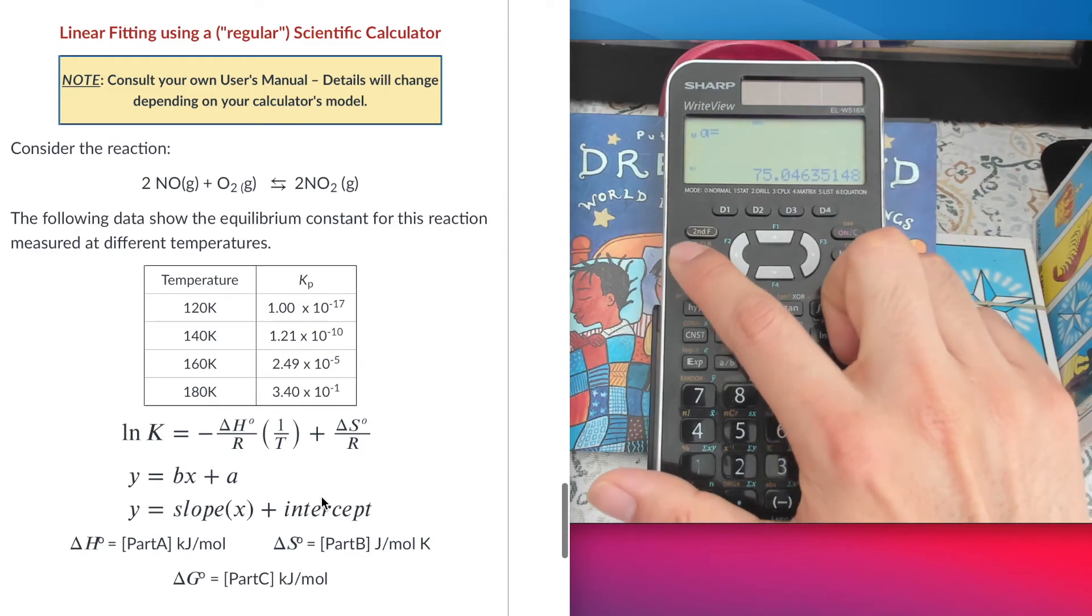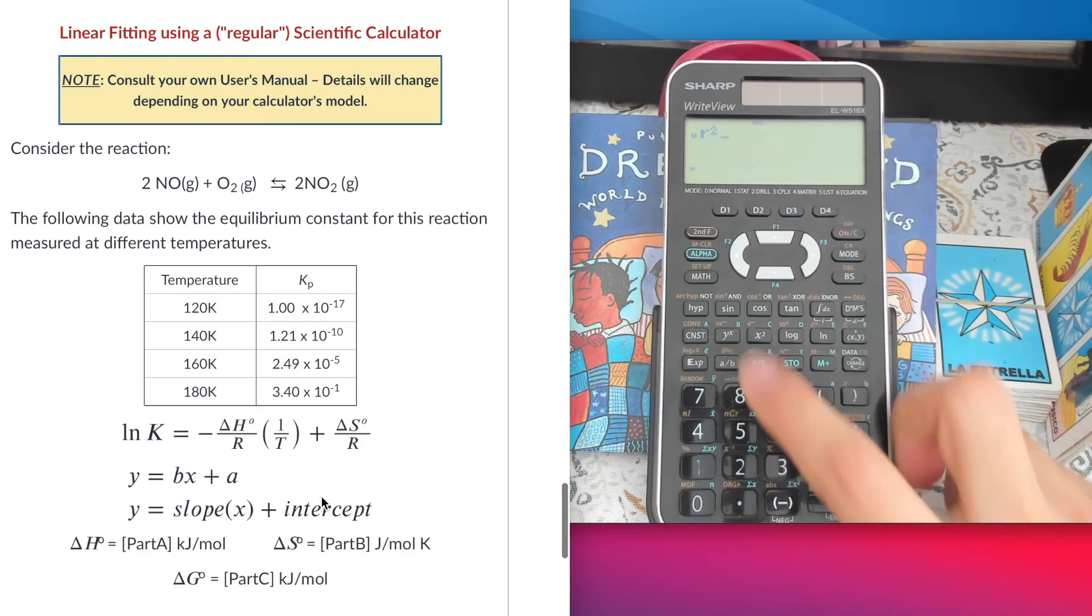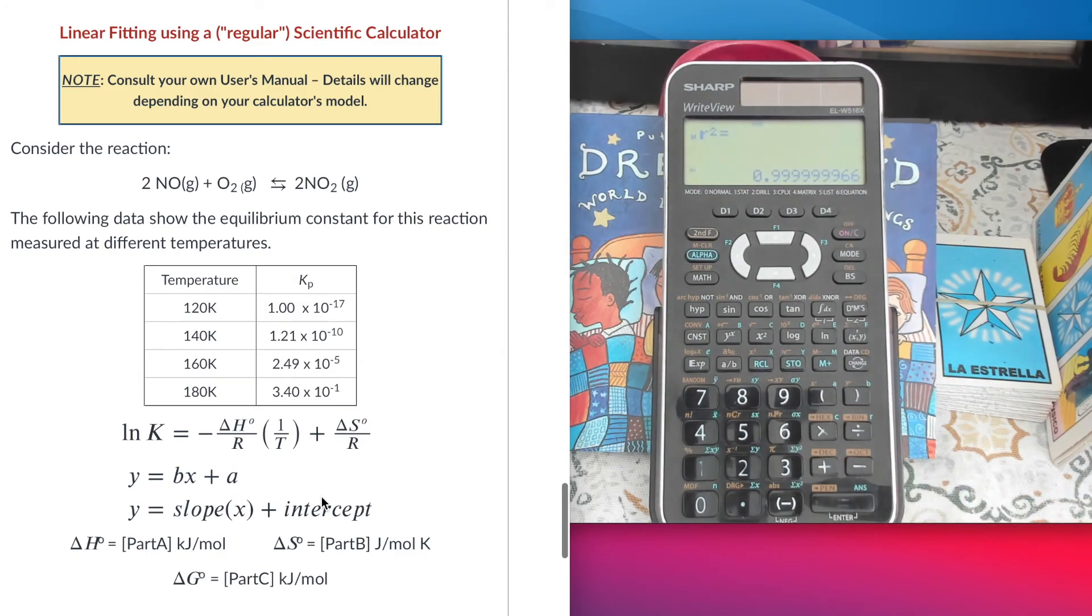Finally, let's check the R square value, so let's get R and then square that value. Look, this one is telling me R square is pretty much 1, which is telling me that there is a very nice correlation, linear correlation, between the variables in my problem, which are natural log of K and the inverse of the temperature.